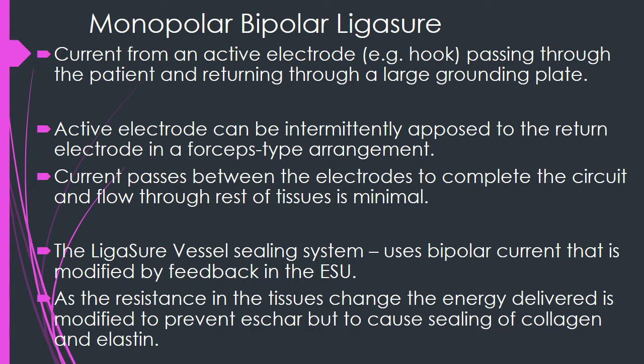While using monopolar cautery, there is only one active pole which is touching the patient; the other pole is the grounding electrode. In bipolar cautery, the active electrode is intermittently opposed to the return electrode in a forceps-type arrangement, so the current passes between the two electrodes to complete the circuit. Thus the flow through the remaining tissues of the rest of the body is very minimal.